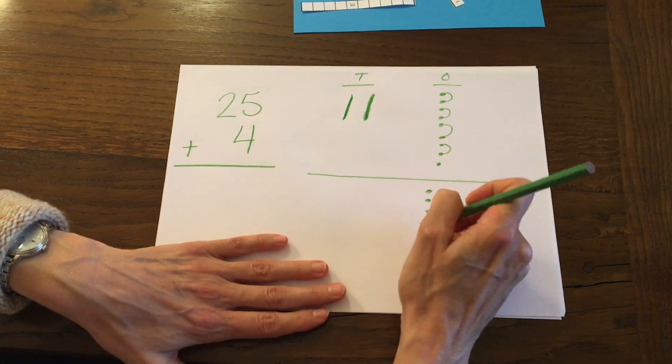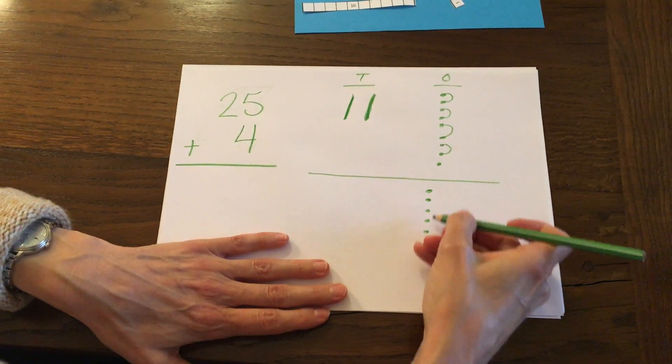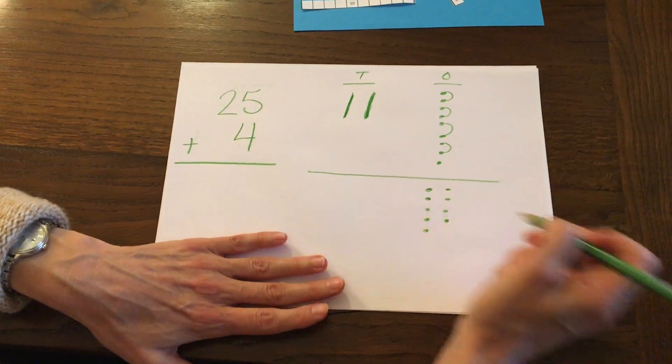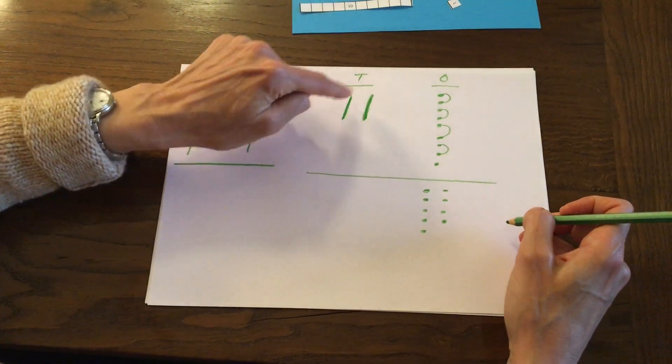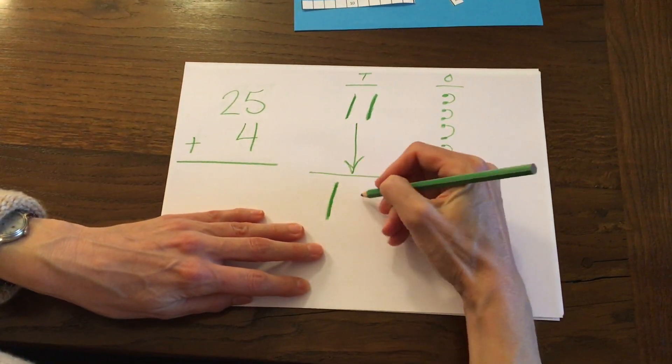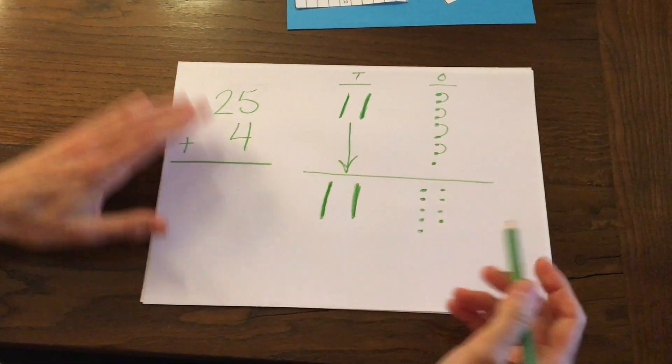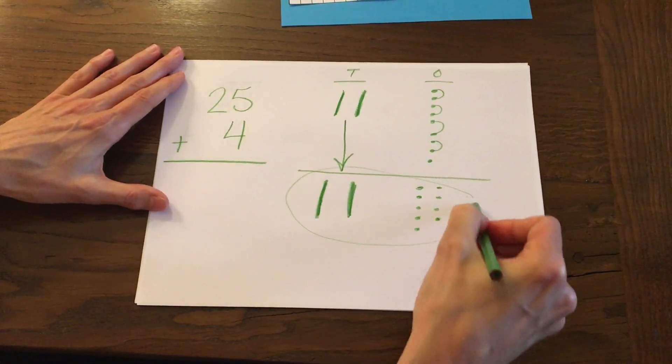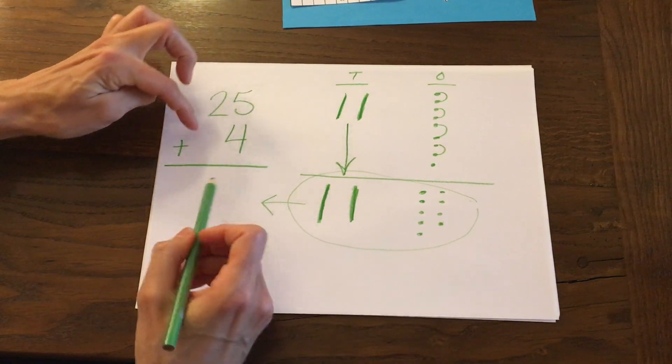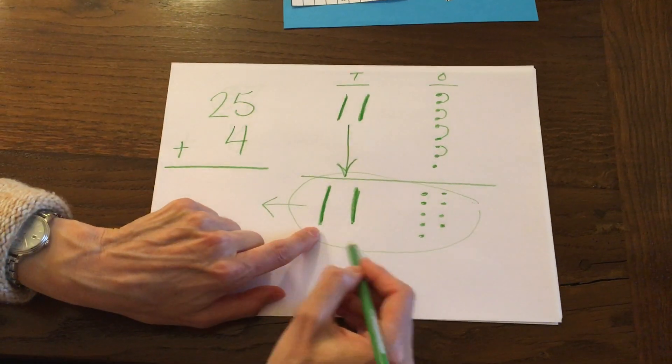So we don't have ten, but I'm going to draw those nine down here. Two, four, that makes five, six, seven, eight, nine. There's my nine ones and I'm going to bring down my two tens. 10, 20. So now I have to take that picture and write it in numbers. 25 plus 4 equals 29.